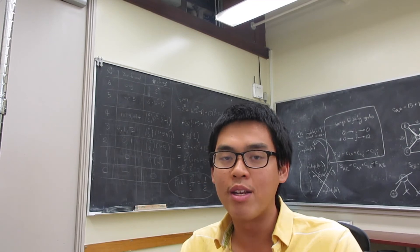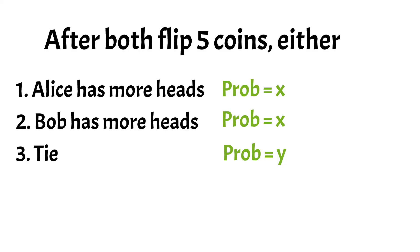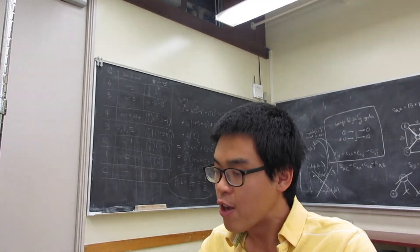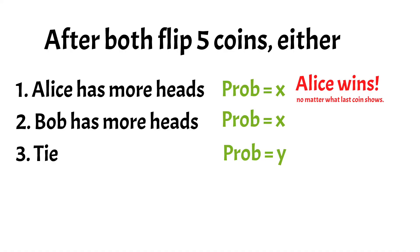Alright, and right here, let's talk about how do we decide who's the winner. Note that if you're in the first case, Alice already has more heads without even using her last coin. So she wins regardless of what the last coin shows. If you're in the second case, Bob has more heads. So even if Alice's last coin shows heads, the best she could hope for is tying for the number of heads, which at the end, she loses anyway.